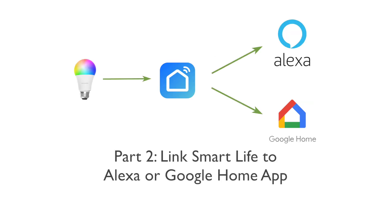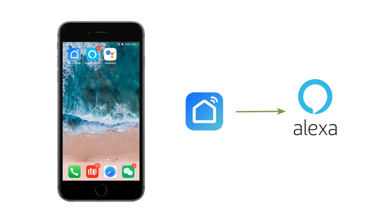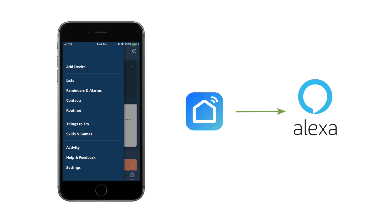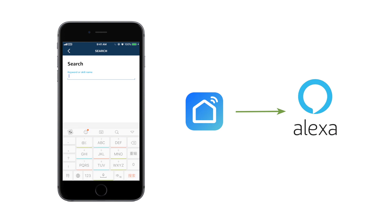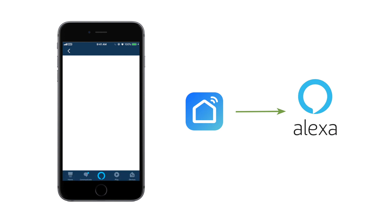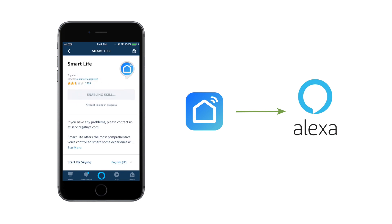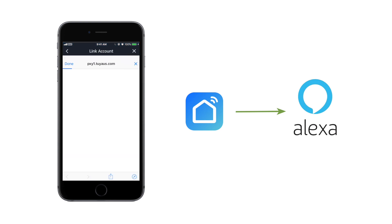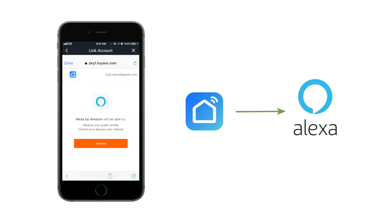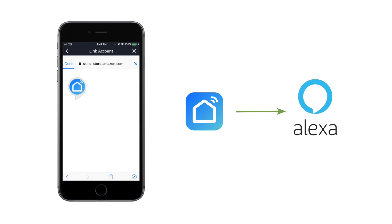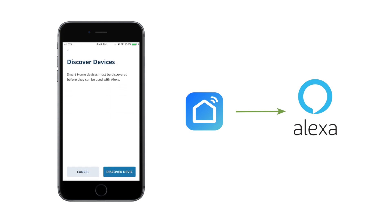Part 2: Link Smart Life to Alexa or Google Home app. To link Smart Life to Alexa, log in to your Alexa application, click Skills and Games from the left sidebar menu, then search for Smart Life and enable it. Log in to your Smart Life account, click Link Now, and authorize Smart Life. Then click Discover Device.